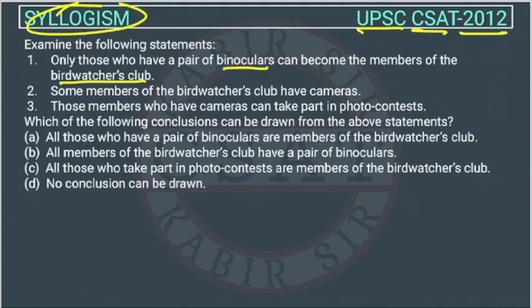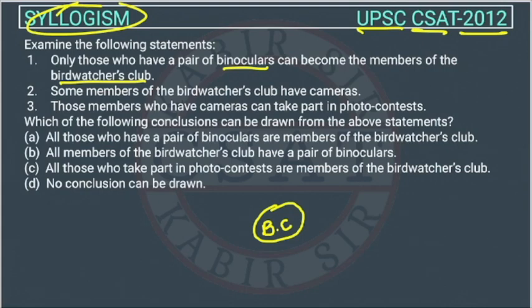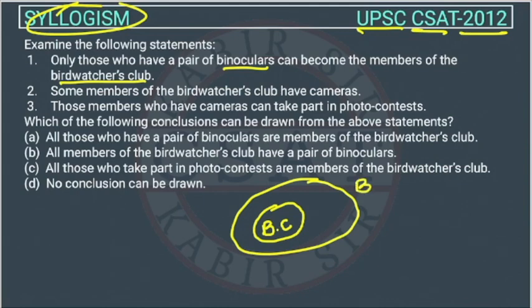For the Venn diagram, suppose this inner circle represents the bird watchers club — these are the members. Since only those who have a pair of binoculars can become members, the outer circle represents the binoculars.